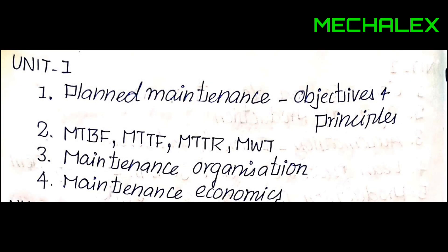The first question is Planned Maintenance and objective principles. Planned Maintenance is a plan — it runs monthly one time or monthly two times. The mission is to run it as a plan.